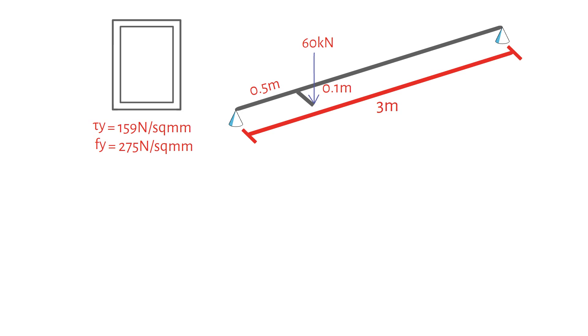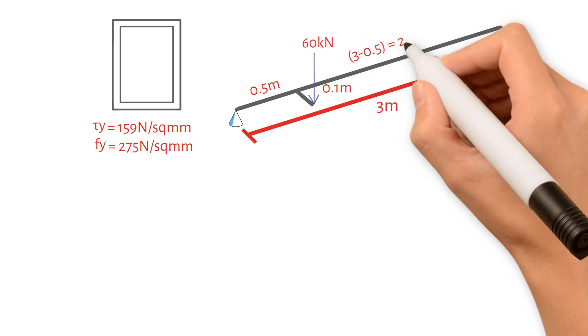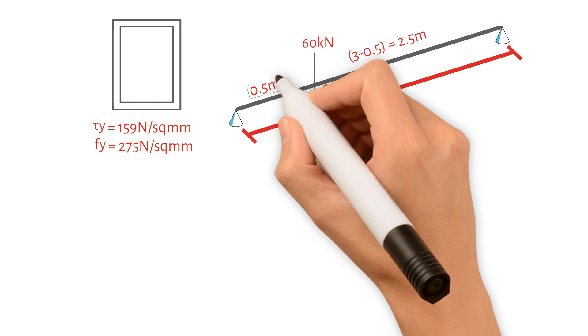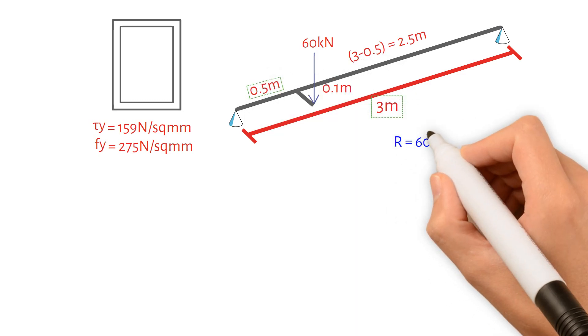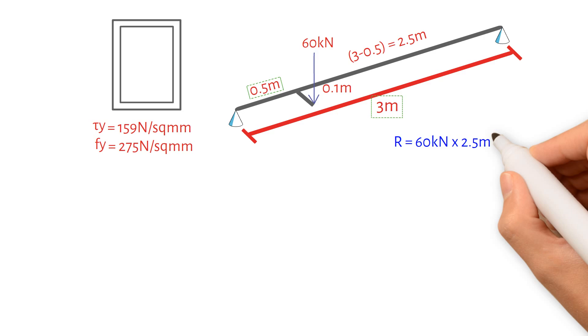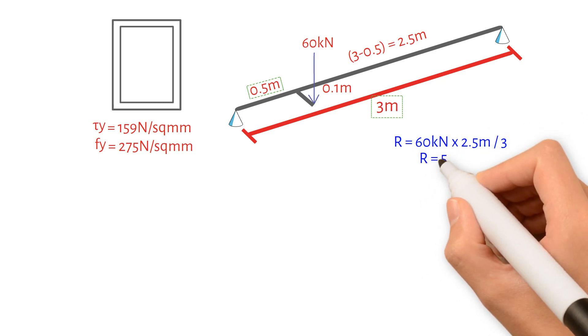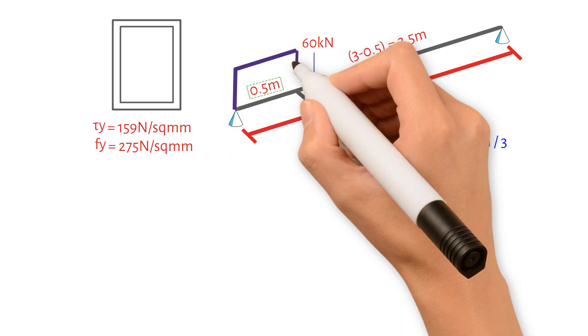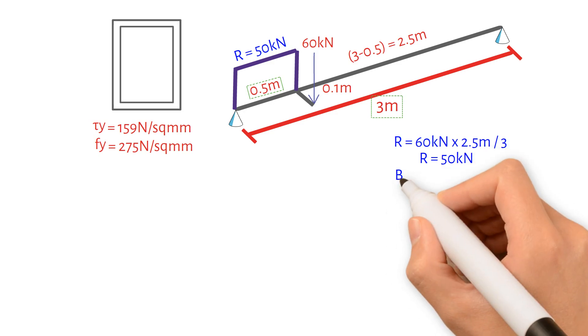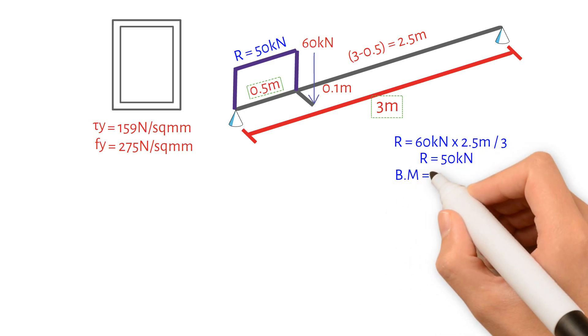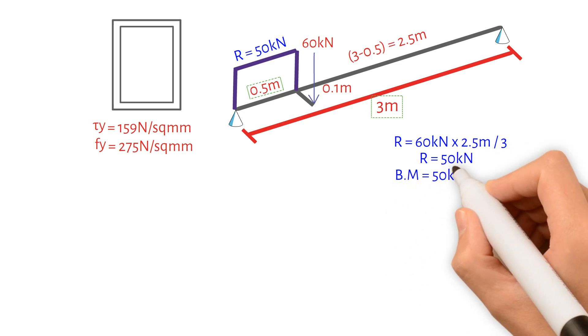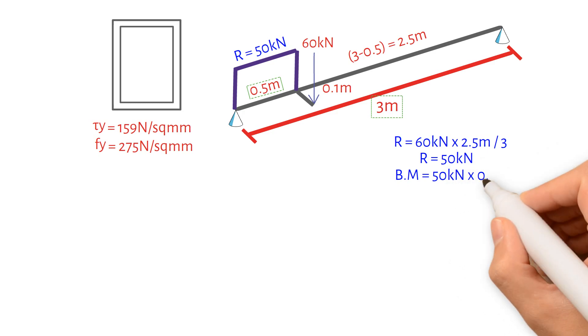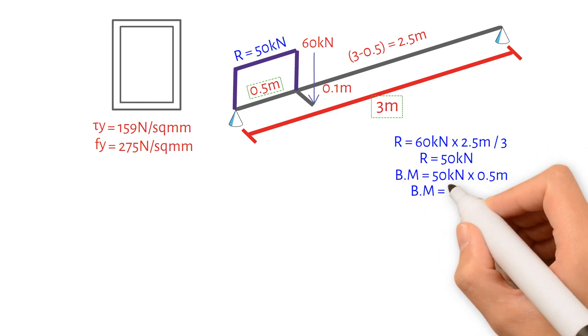First, we will calculate the reaction force. Multiply 60 kN by 2.5 and divide by 3, resulting in 50 kN. Consequently, the maximum bending moment can be calculated by multiplying 50 kN by 0.5 metres, resulting in 25 kN metres.